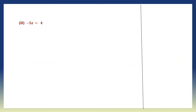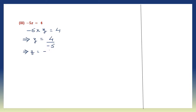Moving on to question 3: minus 5z, so minus 5 into z is equal to 4. To find the value of z, we leave it on the left hand side and 4 on the right. Minus 5 will now become division, so it's 4 divided by minus 5. This cannot be further simplified, so z is equal to minus 4 by 5.